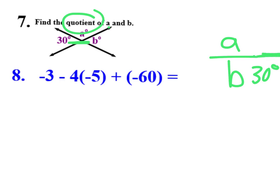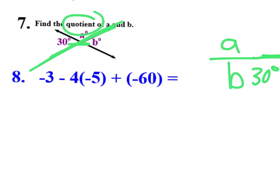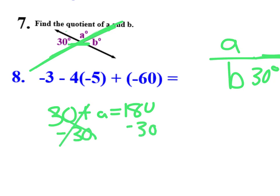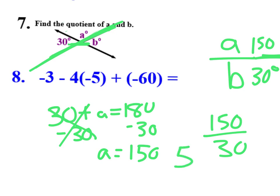And A. Well, if I remember that this green line right here is a straight angle. A straight angle has a measure of 180 degrees. So now that I know that 30 plus A equals 180 degrees, of course I would just solve that algebraically and say, well, I'm going to subtract 30, which gets me A equals 150. So now I'm taking 150 divided by 30. The quotient of A and B, which of course then equals 5.